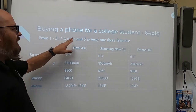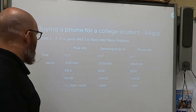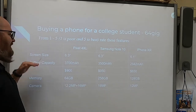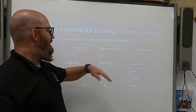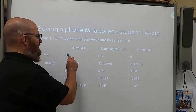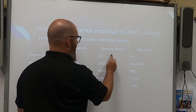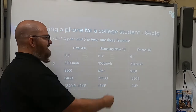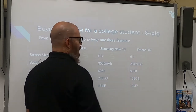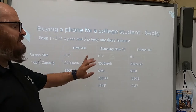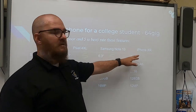A one is poor, five is best, and you can go anywhere in between. So let's start with something we can measure: screen size. The Google Pixel and the Samsung Note are both 6.3-inch screens, so we're going to give these both a five. And a 6.1-inch is not much smaller, so we're going to give that a four. You see how as the numbers fall, so does the rating.